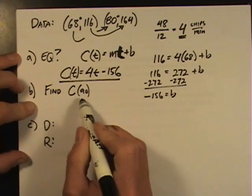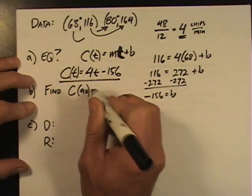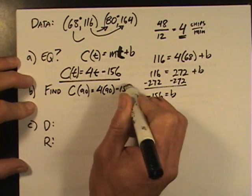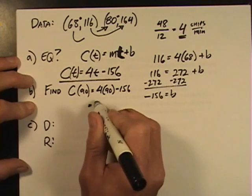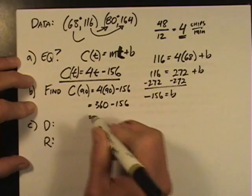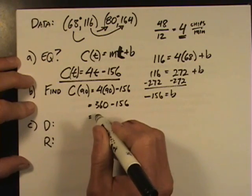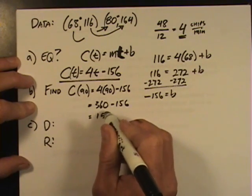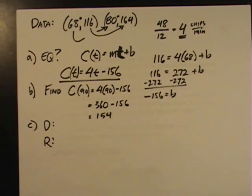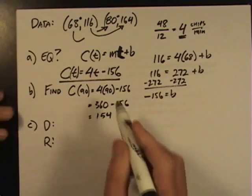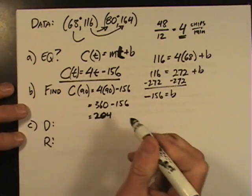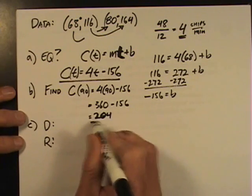They want us to evaluate that equation at 90. So, C of 90 is going to be equal to 4 times 90 minus 156. That's going to be equal to 360 minus 156, which is going to be equal to 204. Excuse me, I'm jumping the gun. 204 chirps per minute.